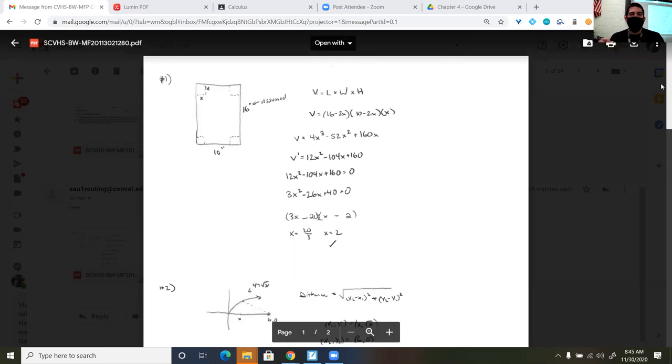Okay, so the three problems I wanted you to do were numbers 1, 2, and 3. And number 1 was that open topped box, so you wanted to optimize the volume.